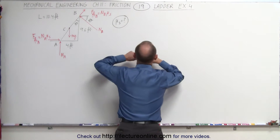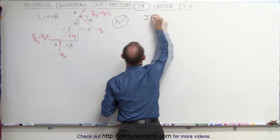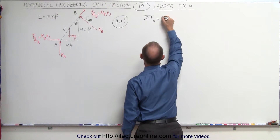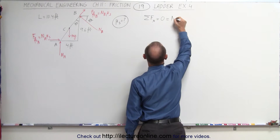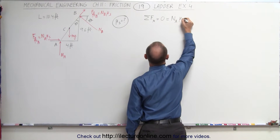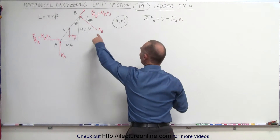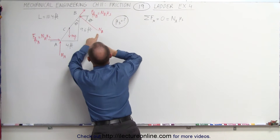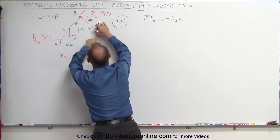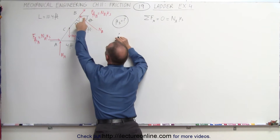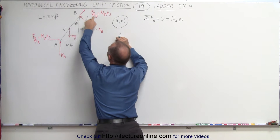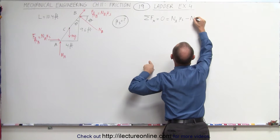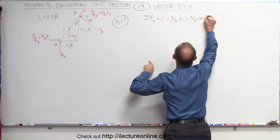So we're going to sum up all the forces in the x-direction, and they add up to zero. We have the normal force at A times the coefficient of friction, and then we have the normal force at B, but we want the horizontal component. If this is the hypotenuse, we multiply by the cosine of theta to get the horizontal component of N sub B, so that would be minus N sub B times the cosine of theta.